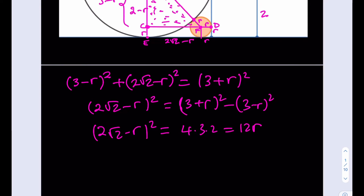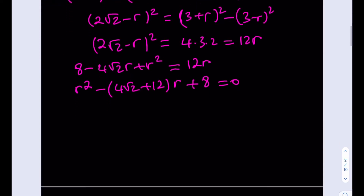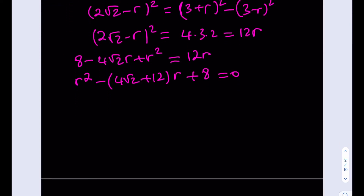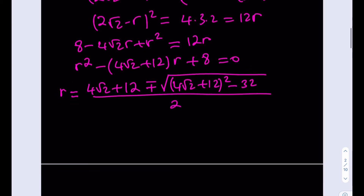So we get this equation, and let's go ahead and expand: (2√2 minus R)² gives us 8 minus 4√2·R plus R², and that's going to equal 12R. Let's put everything on the same side and make it a quadratic: R² minus (4√2 + 12)R + 8 equals 0. So we got our quadratic, and we're going to solve for R using the quadratic formula, which will give us the radius of the smaller circle.